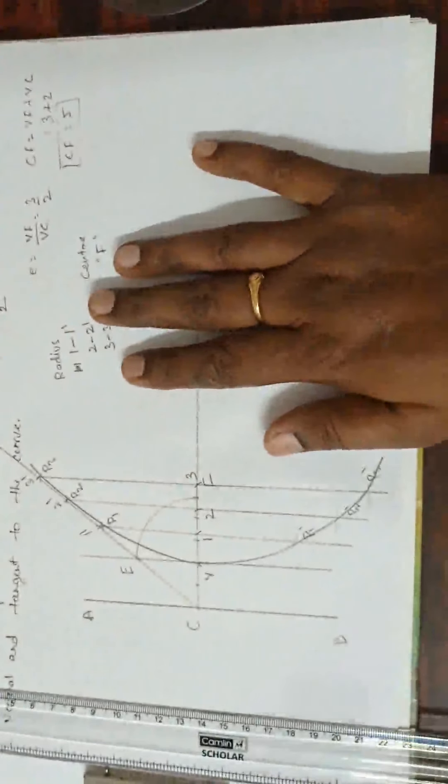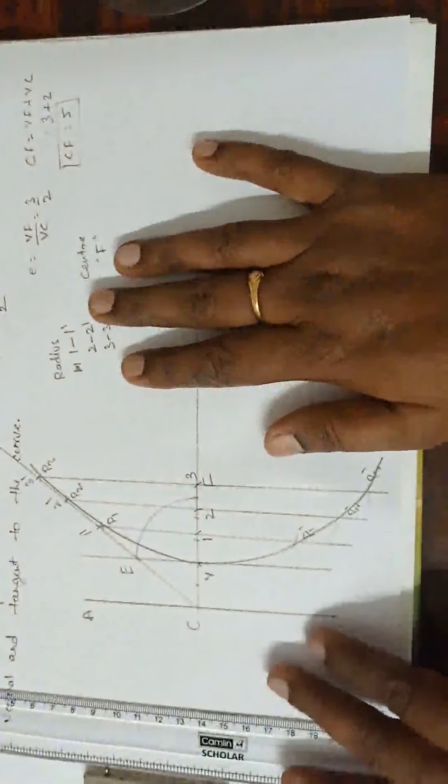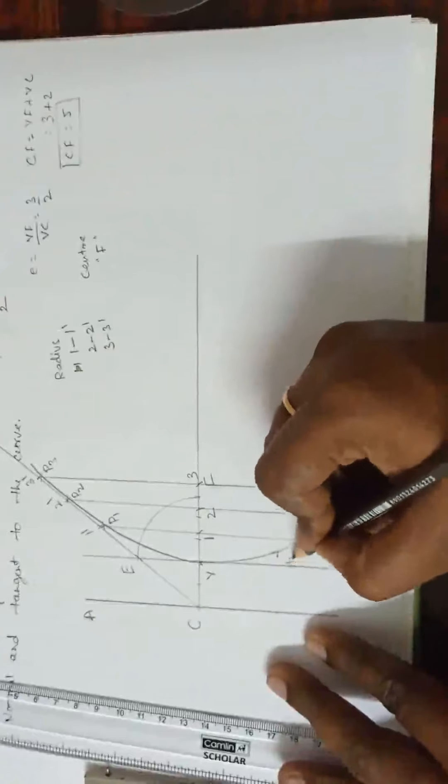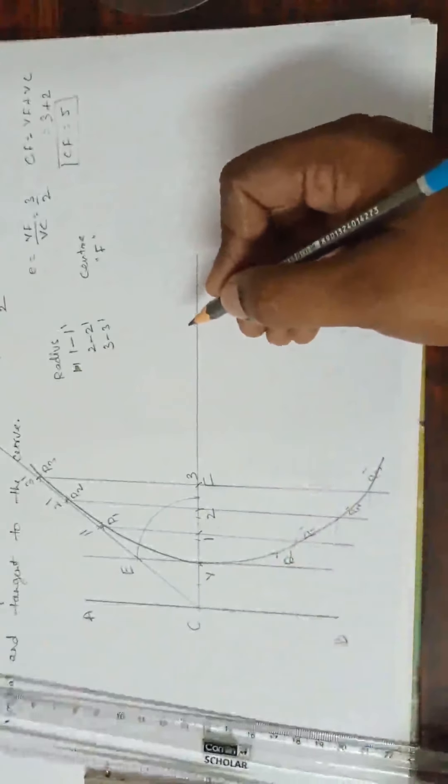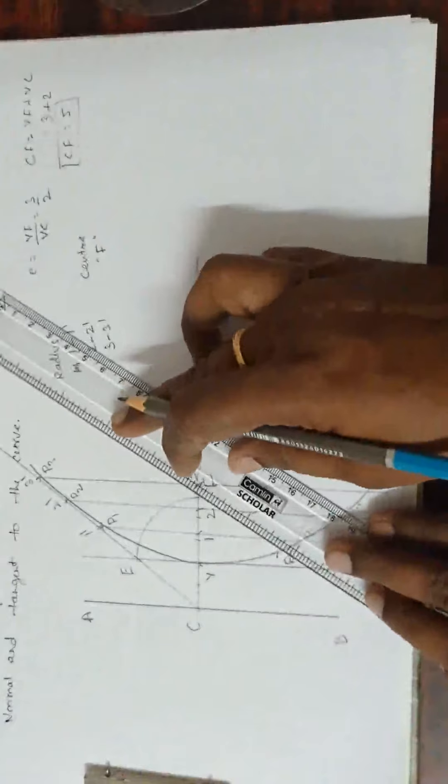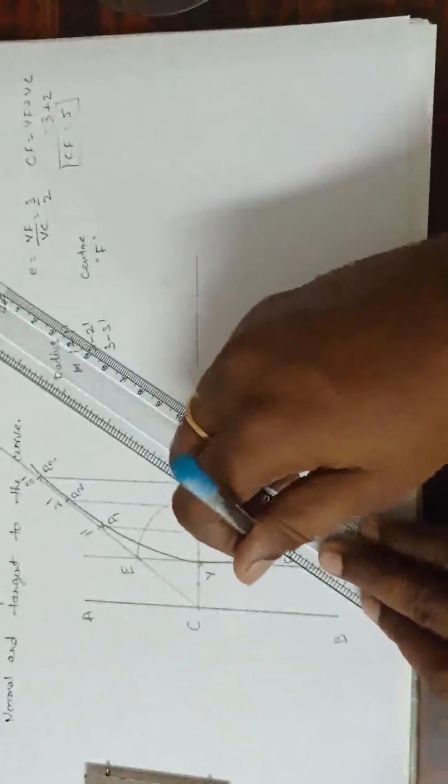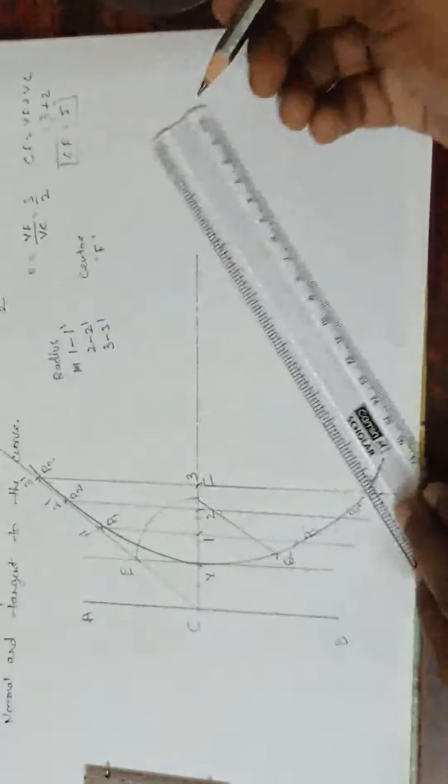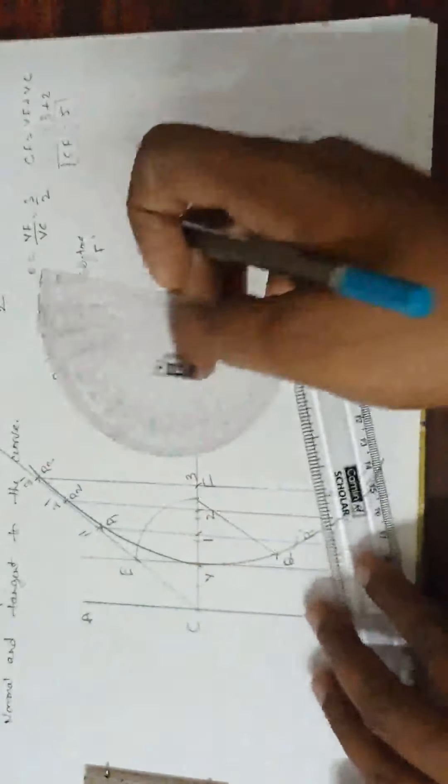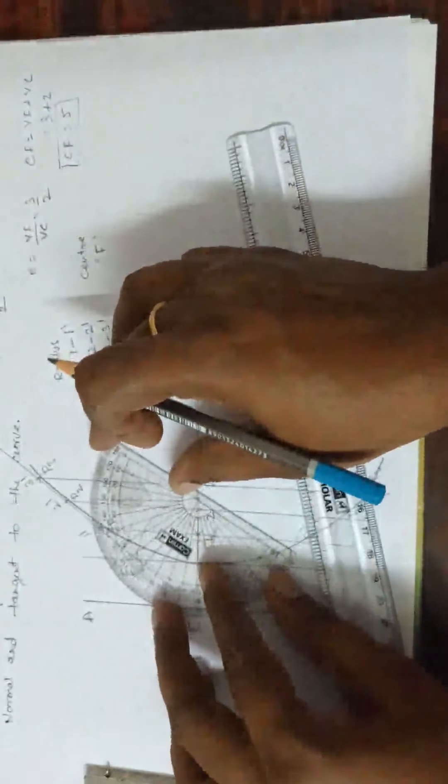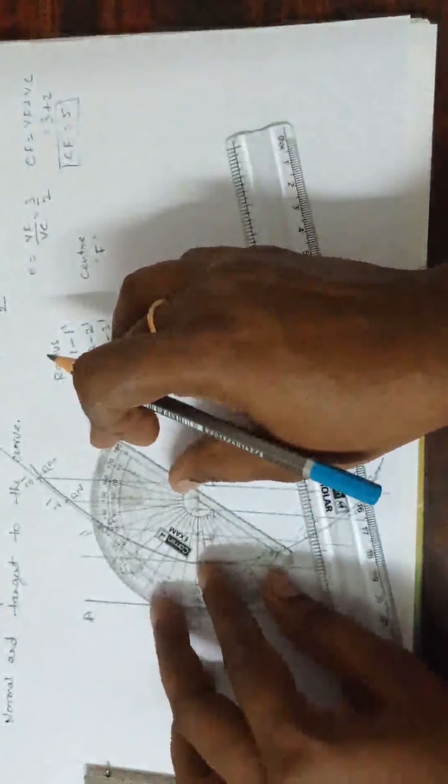Now, let us draw the normal and tangent. Now, everything is same. Mark any point Q. Mark any point Q. Now, from Q, join F. Join QF. Done. Then, to this QF, join the, drop the perpendicular line. That is at 90 degrees.